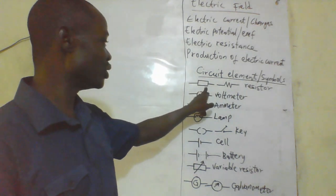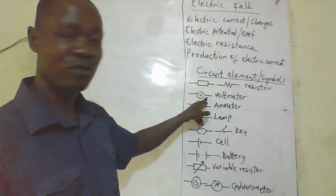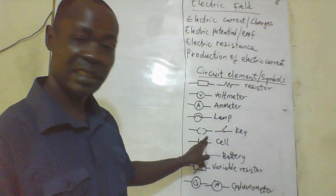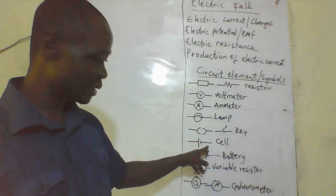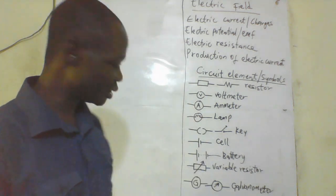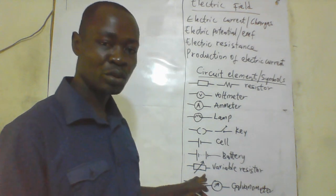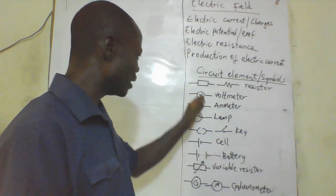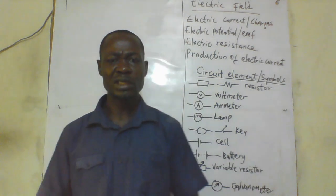This is a resistor — it can be represented this way or this way. This is a voltmeter, this is an ammeter, this is a lamp, and this is a key — the key can be represented like this or this way. Remember, a key is a switch. We also have a cell, and a battery, which is a combination of cells. This is a variable resistor, and this is a galvanometer. These are the basic circuit elements we are going to be using during our course of study.